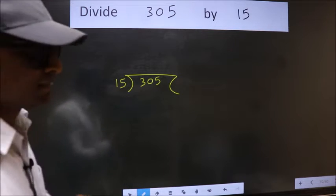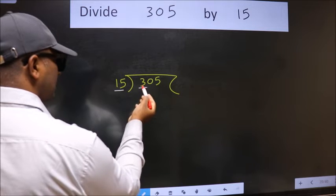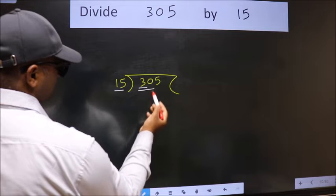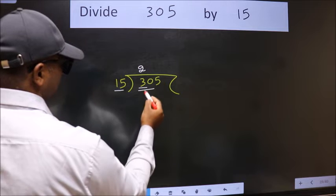Next. Here we have 3. Here 15. 3 is smaller than 15. So we should take 2 numbers, 30. When do we get 30 in 15 table? 15 times 2 is 30.